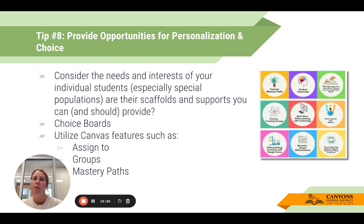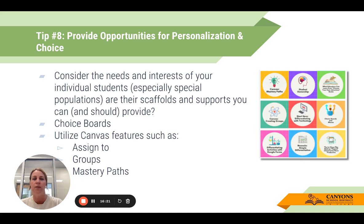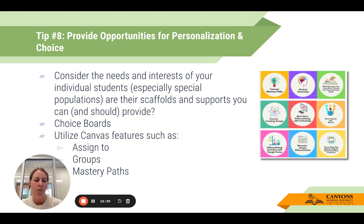Tip number eight: provide opportunities for personalization and choice. Consider the needs and interests of your individual students, especially those special populations. Are there scaffolds and supports you can and should provide? Choice boards are a great way to provide some choice in activities — maybe you don't make them do all items on the choice board, maybe you say pick at least three to complete. Maybe there are choice boards you're already using within your classroom. Are there ways for you to provide some elements of choice? Sometimes choice gets students excited to complete whatever they're being asked to do.